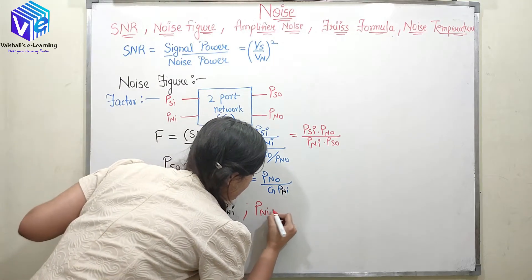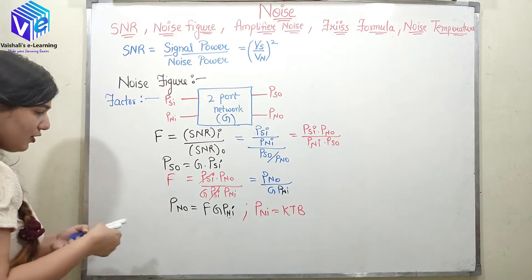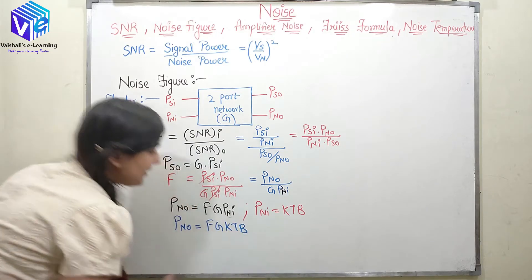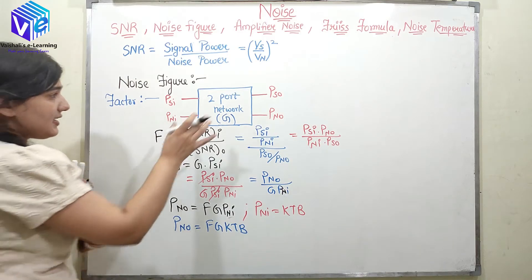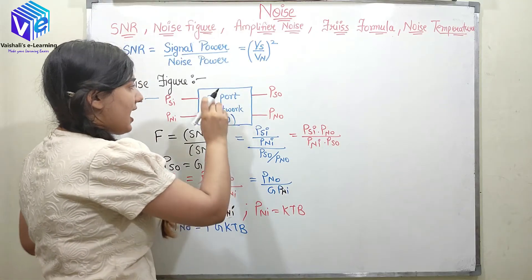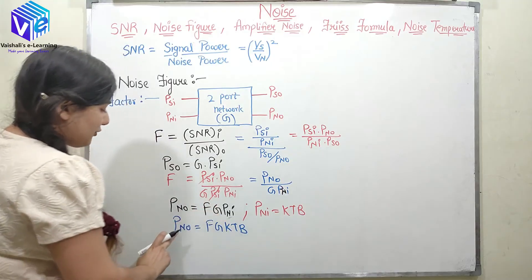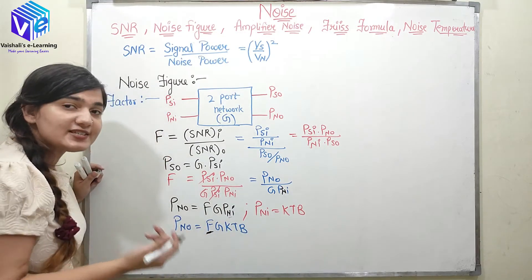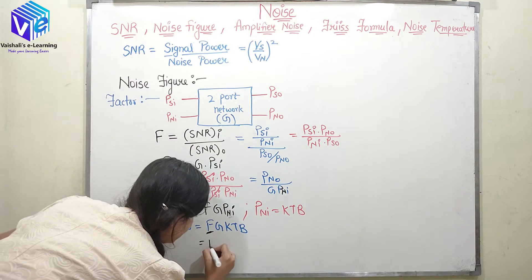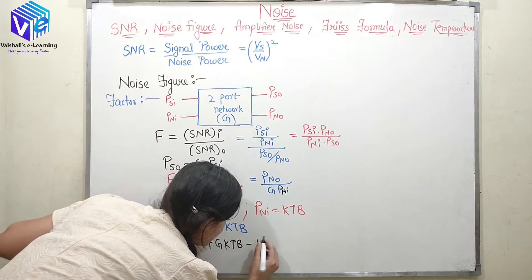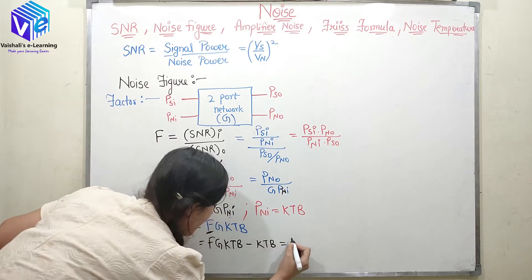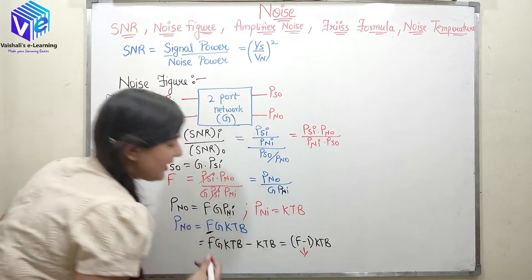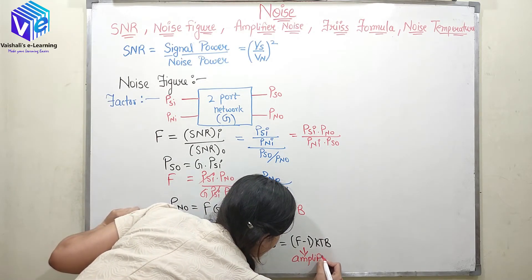PN_input = K × T × B (which I discussed in my previous video). So PN_output = F × G × K × T × B. You can see that output noise is not simply G times input noise — there is the additional factor F. Subtracting G × KTB from F × G × KTB gives (F−1) × KTB, which is the additional noise added by the amplifier — this is the amplifier noise.